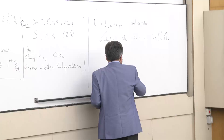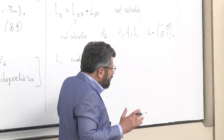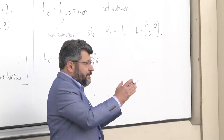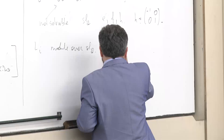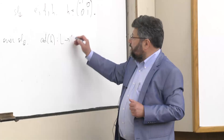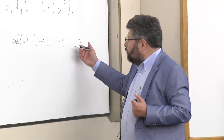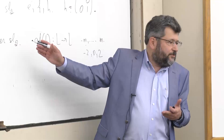The basis of sl2 is always denoted E, F, H in all books, where H corresponds to the diagonal element. Now this sl2 acts, and every Li is a module over sl2. Every finite-dimensional module over sl2 and over any other semisimple finite-dimensional algebra is a direct sum of irreducibles. In every dimension there is just one irreducible module over sl2, so there are finitely many types. If you consider the eigenvalues of H acting on L, it has finitely many eigenvalues — say, from -m to m.